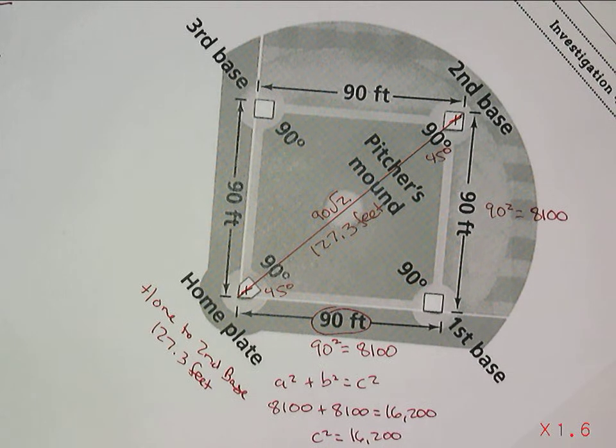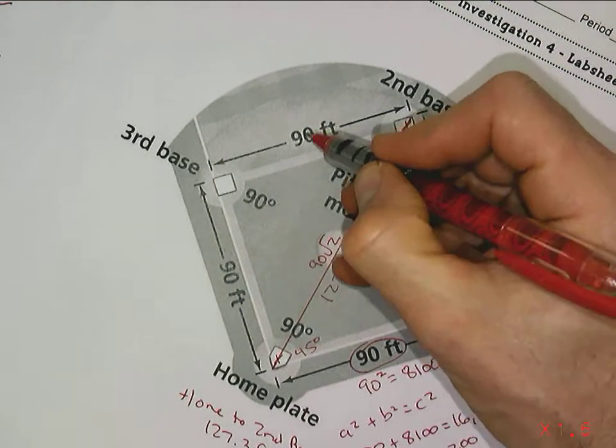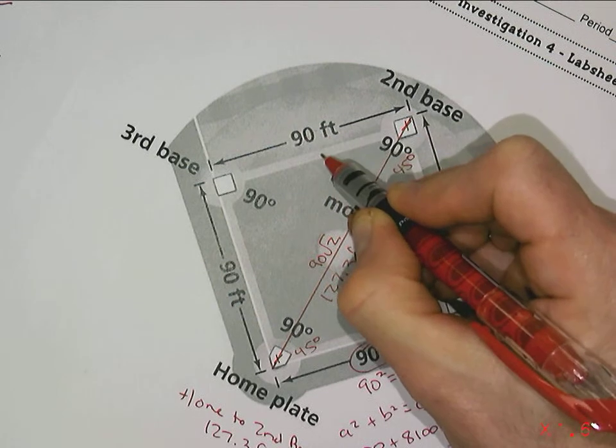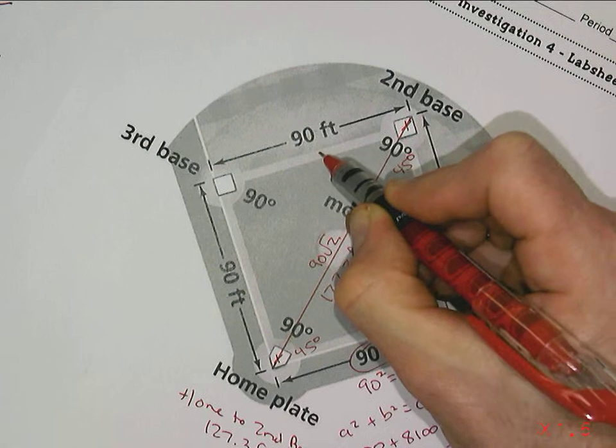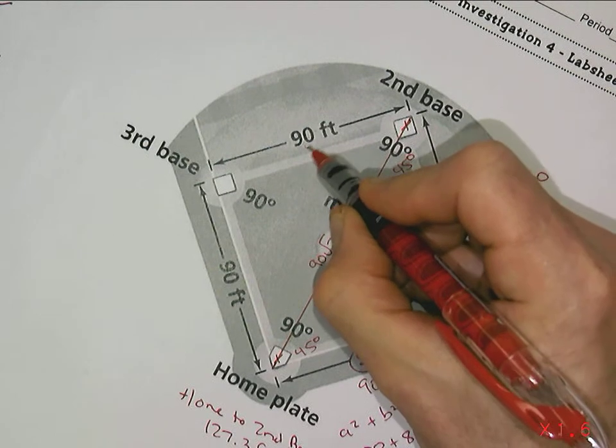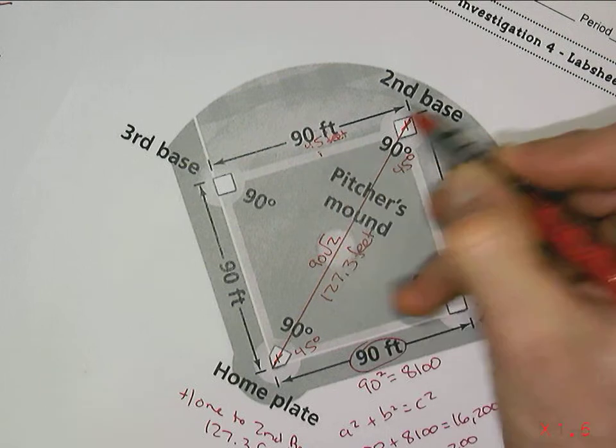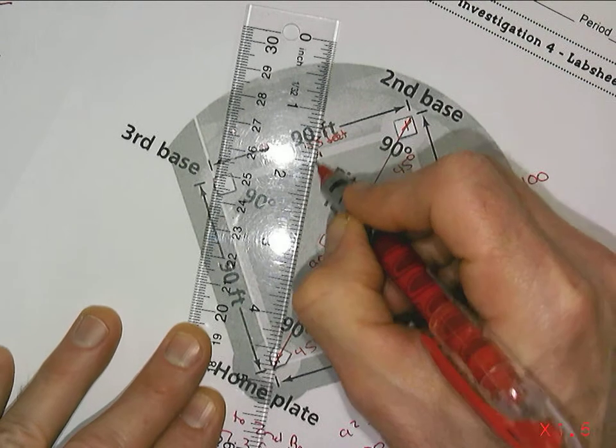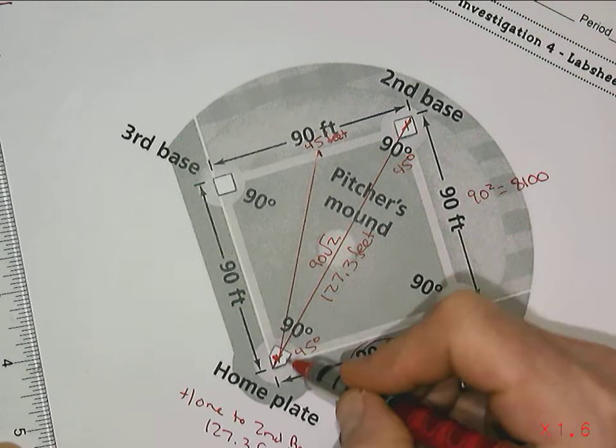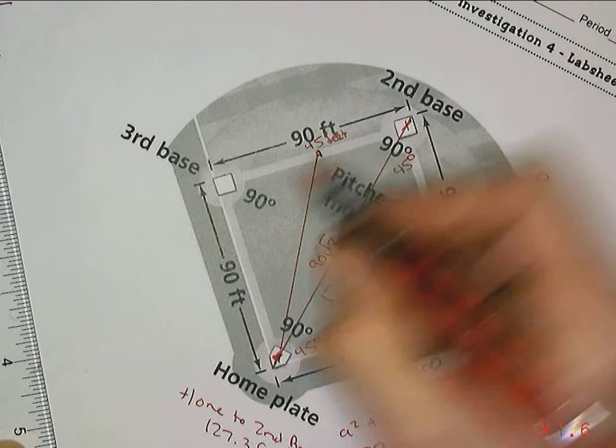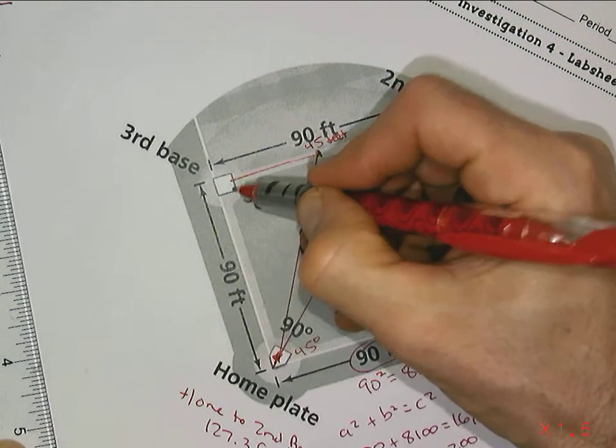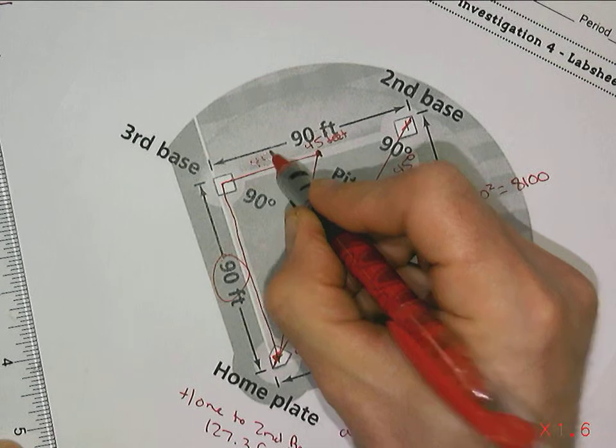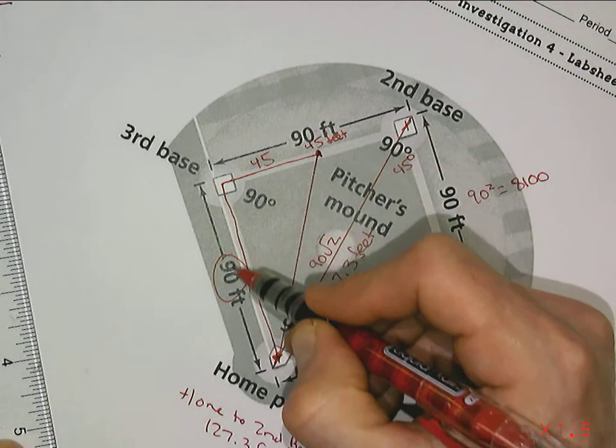Now, what if we wanted to find a different distance? For example, what if the shortstop was standing exactly halfway between second and third base? The shortstop stands in this area generally, but what if it was right there, which would be half of 90, which is 45 feet from either second or third base. If I were to think of a right triangle that extends to that point from home plate, we actually have a nice right triangle here, and that right triangle has legs of 90 and 45.